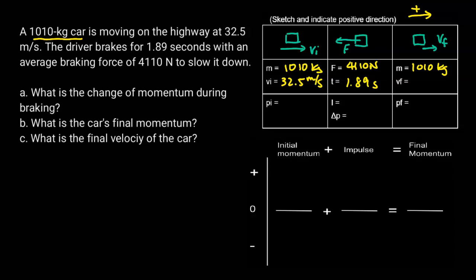Now I'm going to fill out the rest of this chart — by doing so I'll be able to answer the three questions below. First, I'm going to calculate the initial momentum: the initial momentum is the mass times the velocity, and we get 32,825.